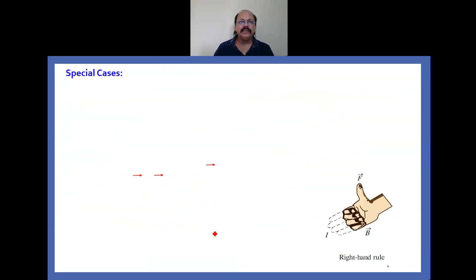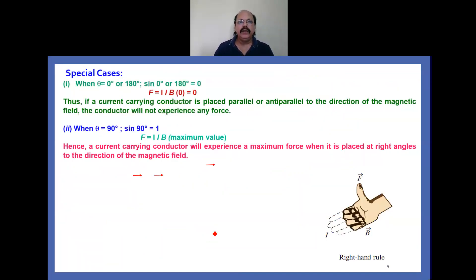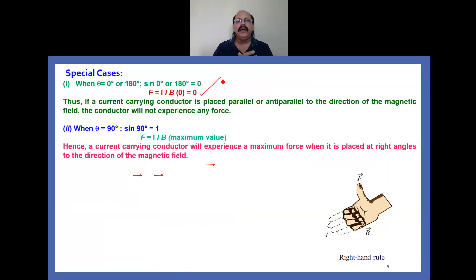Now we take some special cases. When θ = 0° or 180°, sin 0° or sin 180° = 0. So the force experienced by a current carrying conductor placed in a uniform magnetic field parallel or anti-parallel to the field is zero. You can verify this from F = ILB sinθ: substituting sin 0° or sin 180° gives F = 0. So if a current carrying conductor is placed parallel or anti-parallel to the direction of magnetic field, the conductor will not experience any force.